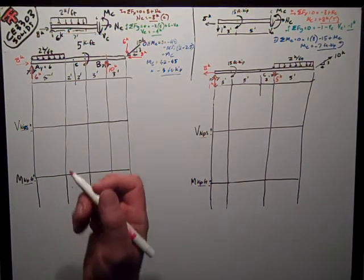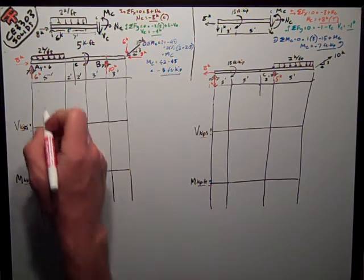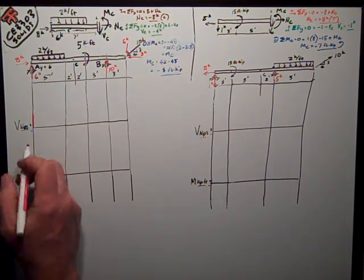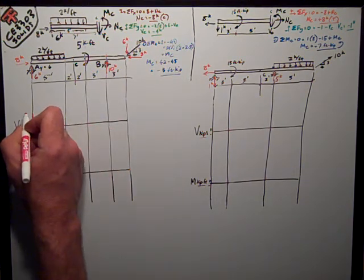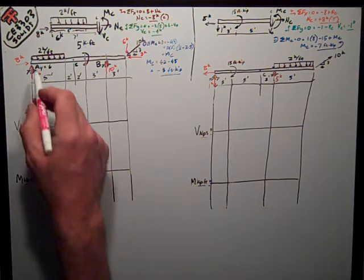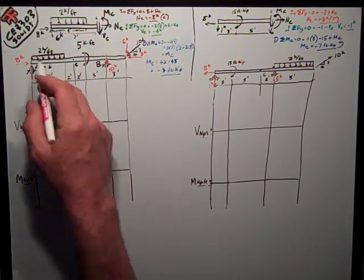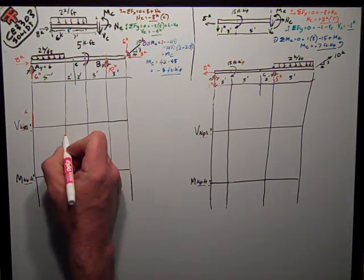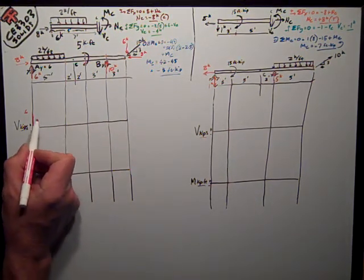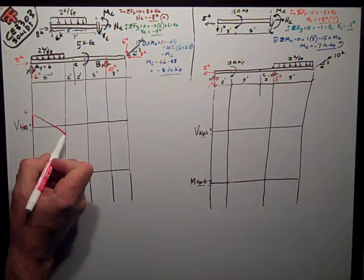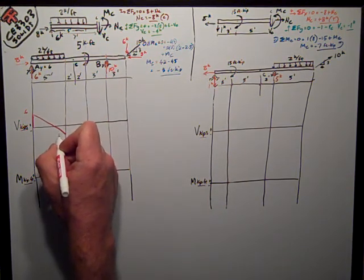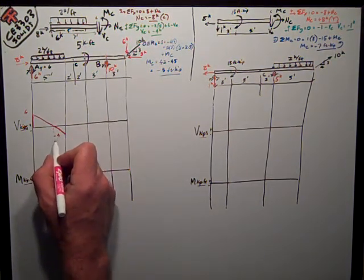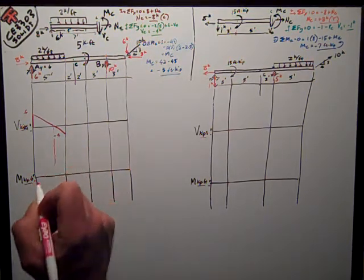We're now ready to draw the diagram using the graphical method, which makes it real easy. I start off on the left end and go up six kips. The slope of my shear diagram equals the value of my load diagram, which is negative two kips per foot. So in five feet it's going to slope down two times five, or ten, from six to negative four. I also want to figure out where the shear goes to zero, because that's going to be important on my moment diagram. The change in the shear diagram between any two points is the area under the load diagram, so from six to zero is a change of six; six divided by two is three — that's three feet.